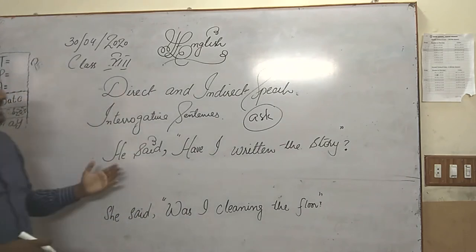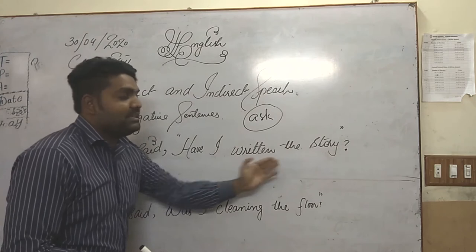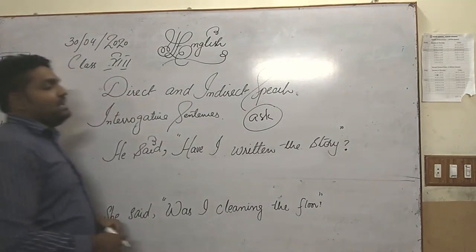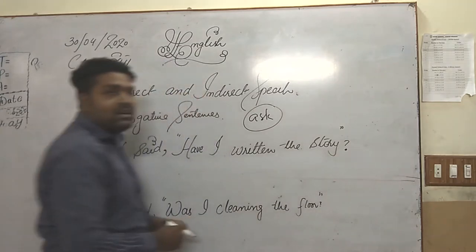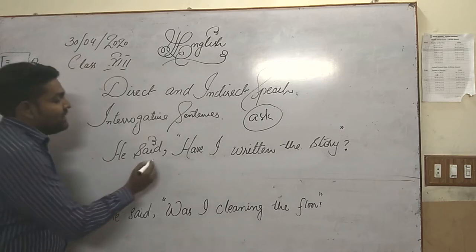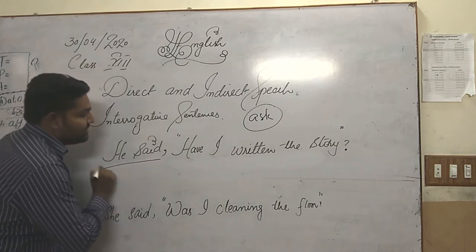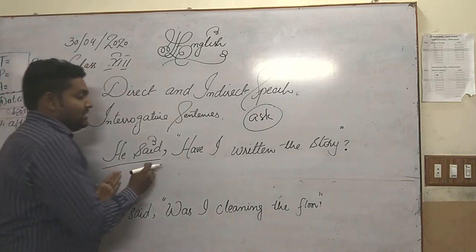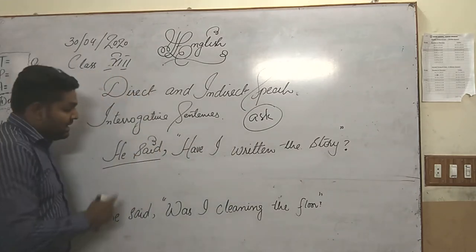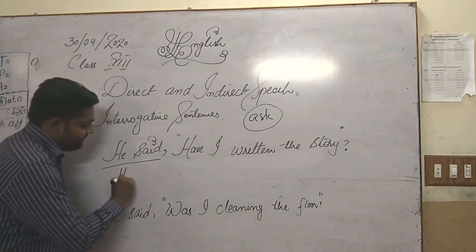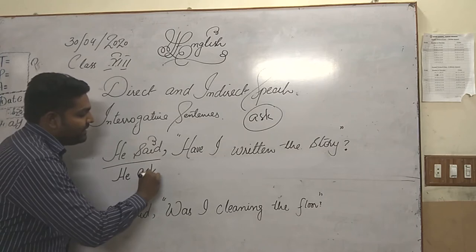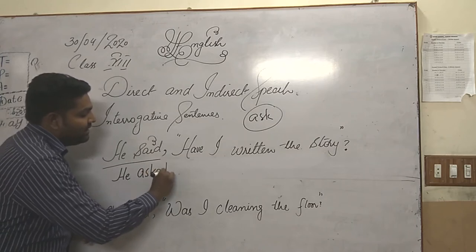For example, I have written over here: he said, have I written this story? In this sentence, you can see that at the end there is a question mark. We need to focus on the parts of the sentence. The first clause, he said, must be changed into he asked.